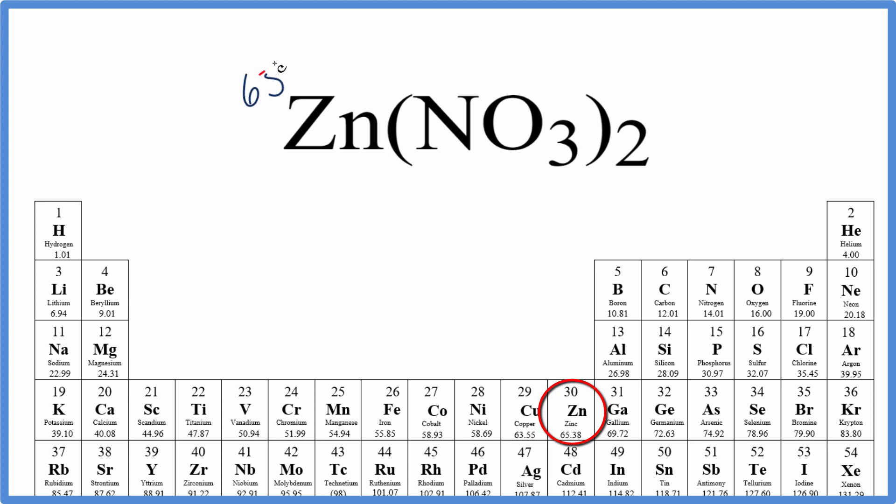Zinc is 65.38 grams per mole, nitrogen 14.01 grams per mole, and then oxygen is 16.00 grams per mole.